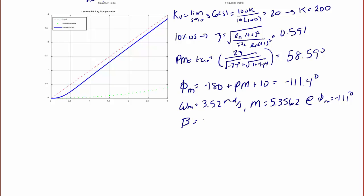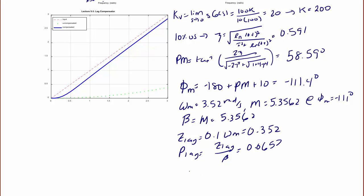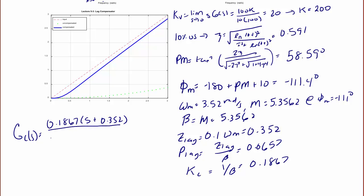We set beta equal to M, which equals 5.3562. Z-lag is equal to 0.1 times omega sub m, which is 0.352. P-lag equals z-lag over beta, which equals 0.0657. KC equals 1 over beta, which equals 0.1867. The final compensator is: GC(s) equal to 0.1867 times (s + 0.352) divided by (s + 0.0657).